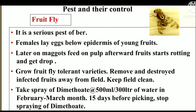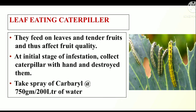Pest and their control. First, fruit fly — it is a serious pest for Ber. Females lay eggs below the epidermis of young fruits. Later on, maggots feed on the pulp and fruits start rotting and get dropped. Controls: grow fruit fly tolerant varieties; remove and destroy infected fruits away from field and keep field clean; take spray of Dimethoate 500 ml per 300 liters of water in February and March month, and stop spraying 15 days before picking. Leaf-feeding caterpillar: they feed on leaves and tender fruits and thus affect fruit quality. At initial stage of infestation, collect caterpillar by hand and destroy them. Take spray of Carbaryl 750 g per 200 liters of water.